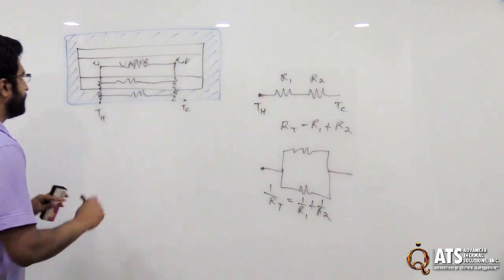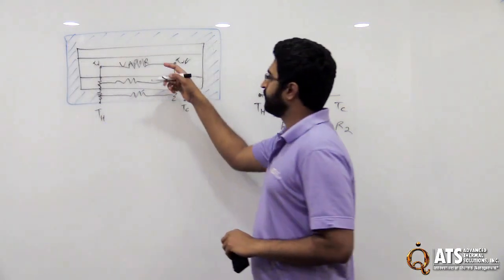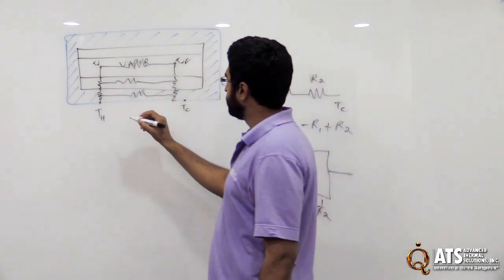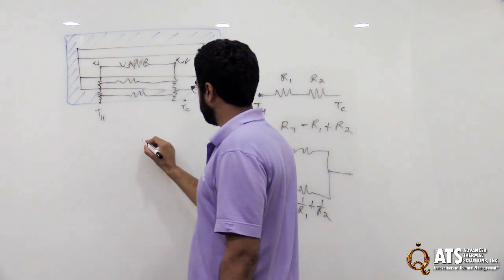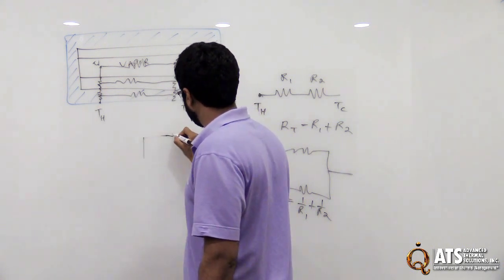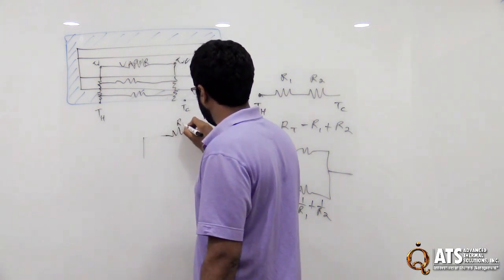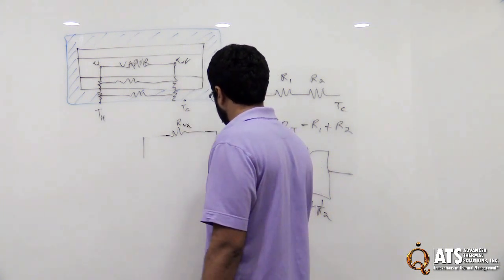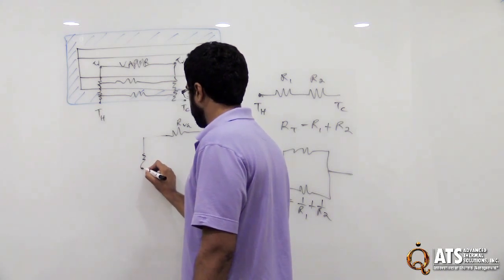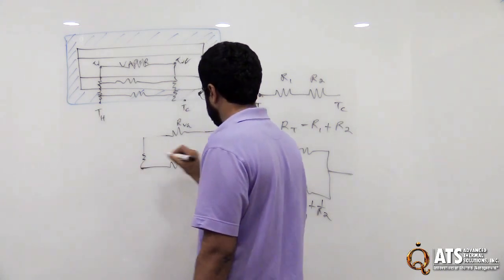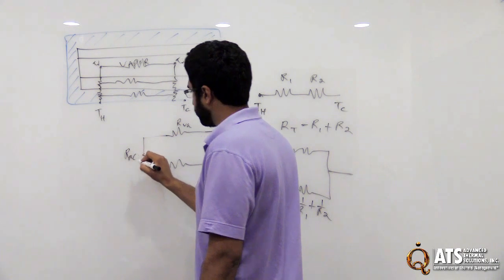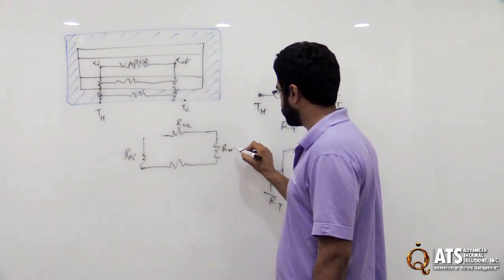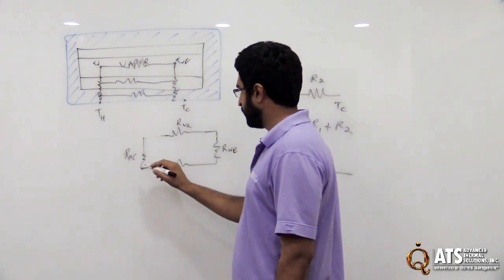And so the way we do that in this is we'd have to go from the middle down this way. So if you have, let me start off here. So if you have your resistance of the vapor, your axial resistance, and then the radial resistance through the condenser and the radial resistance of the wick structure through the evaporator.